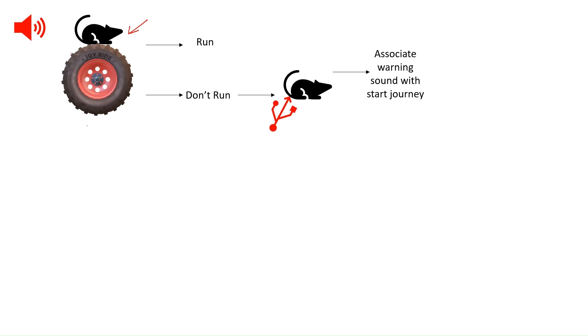It will associate that when the sound comes, it has to run, otherwise it will get the punishment. So the conclusion is: by operant conditioning, any action can be trained.